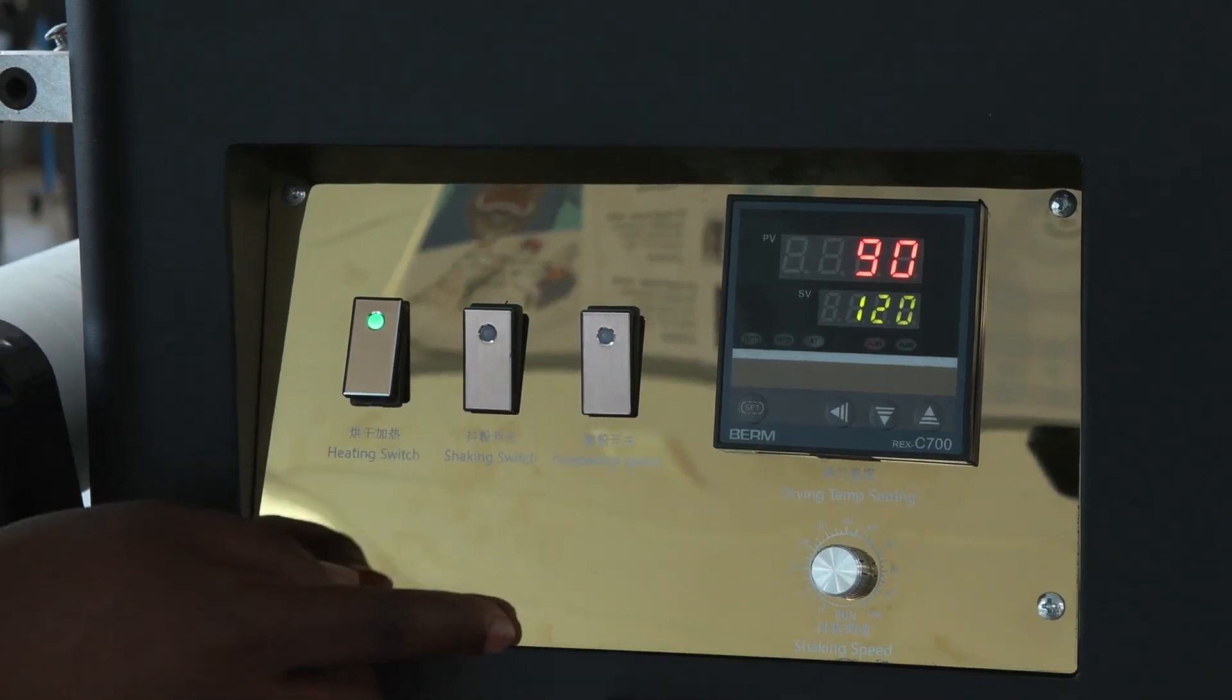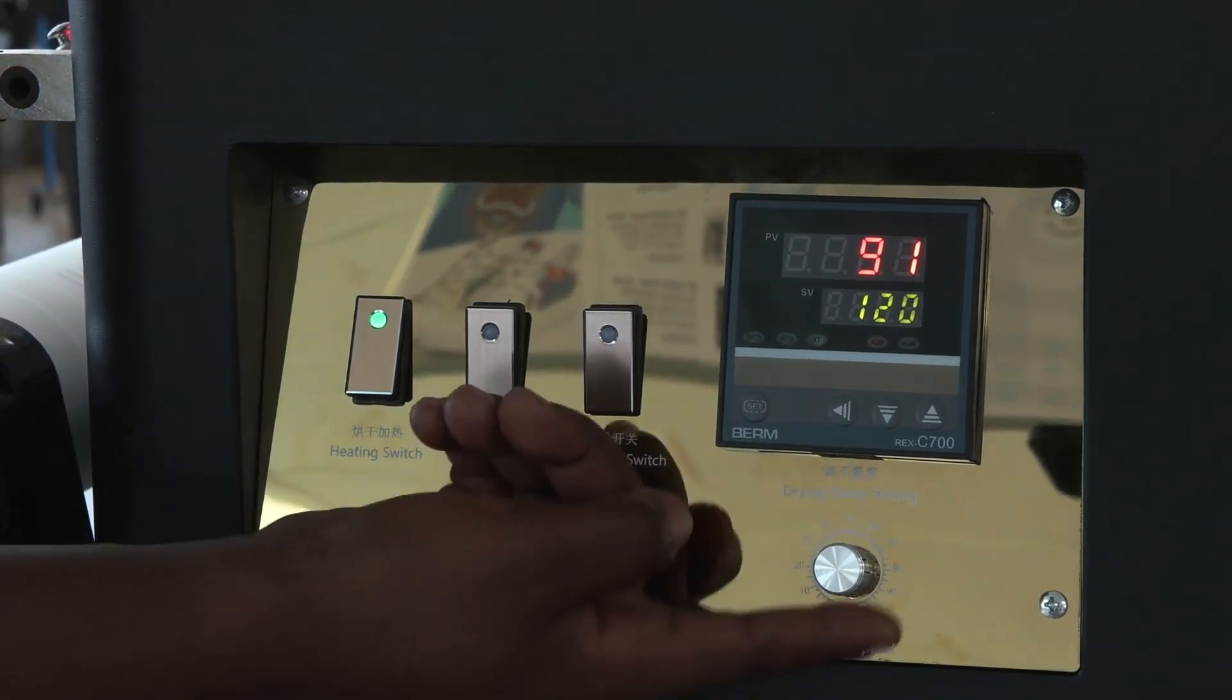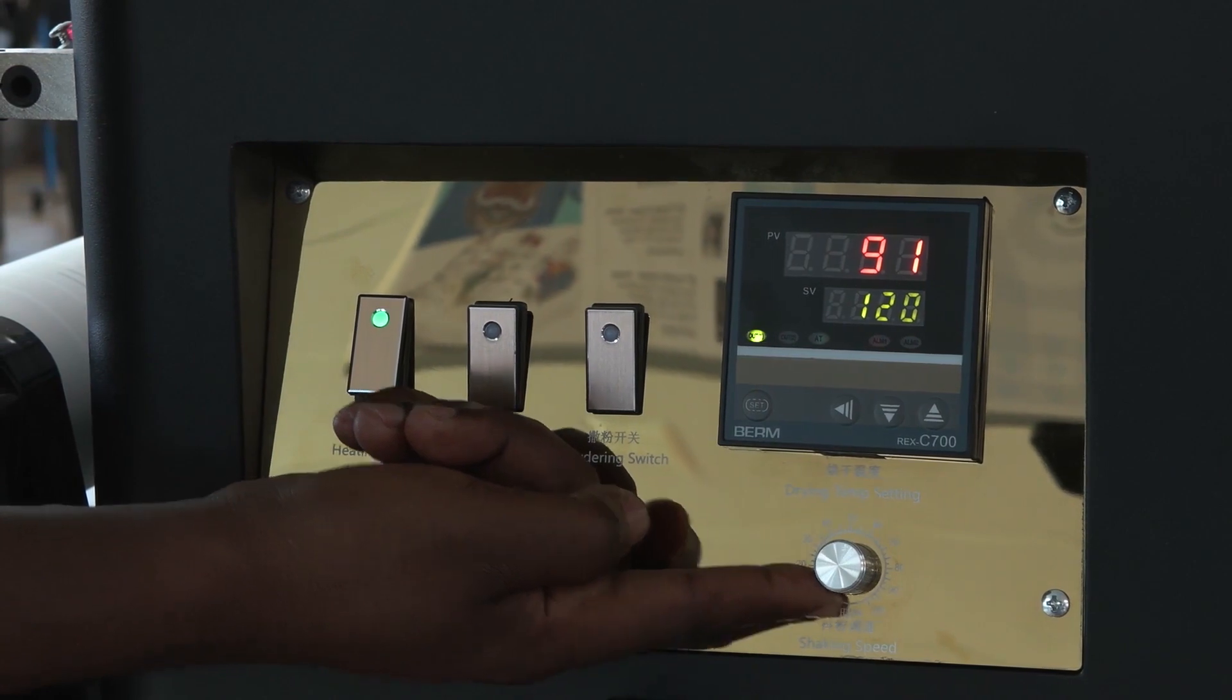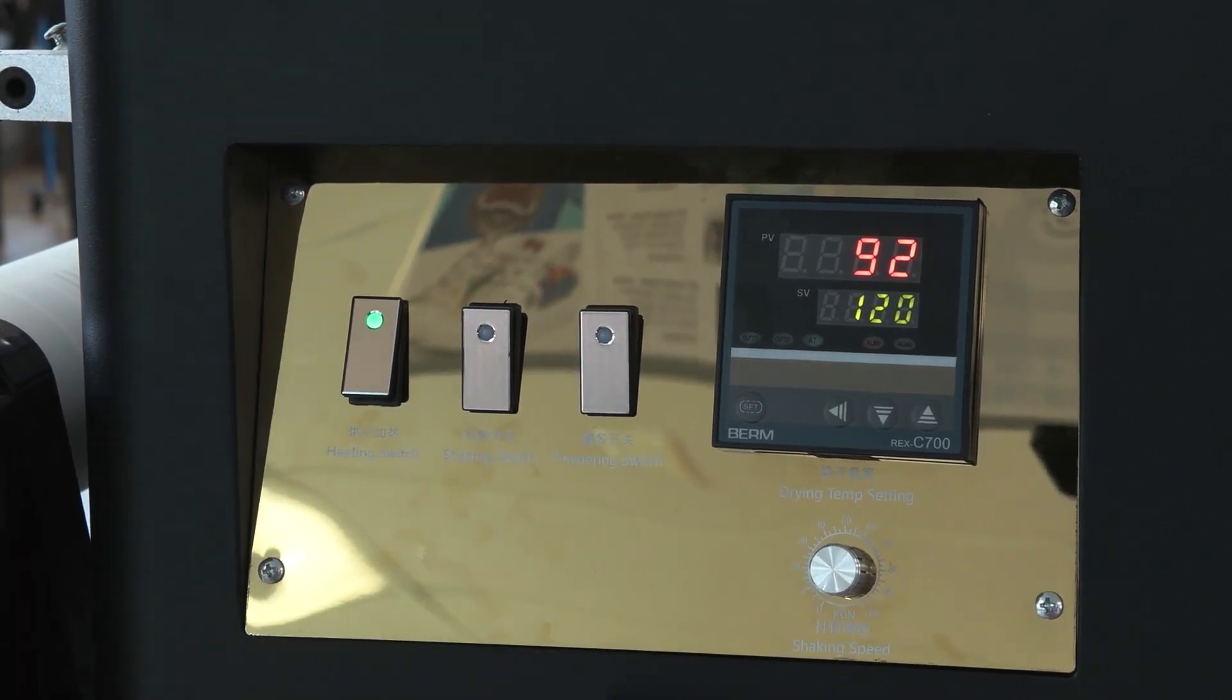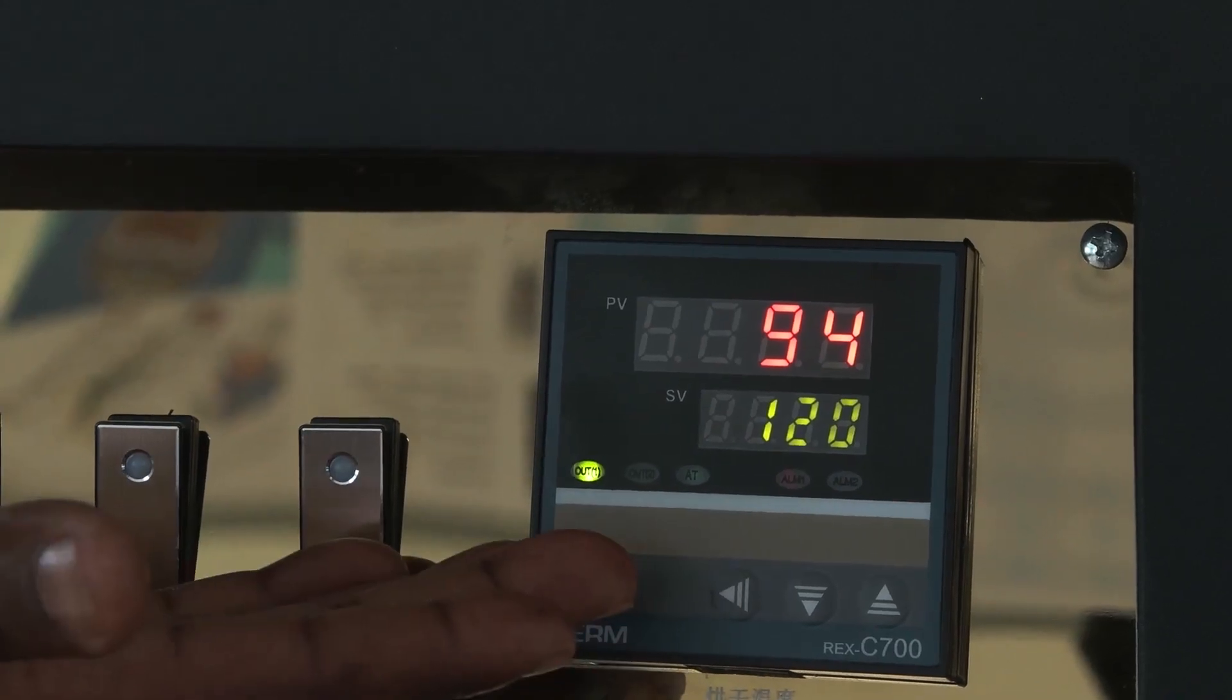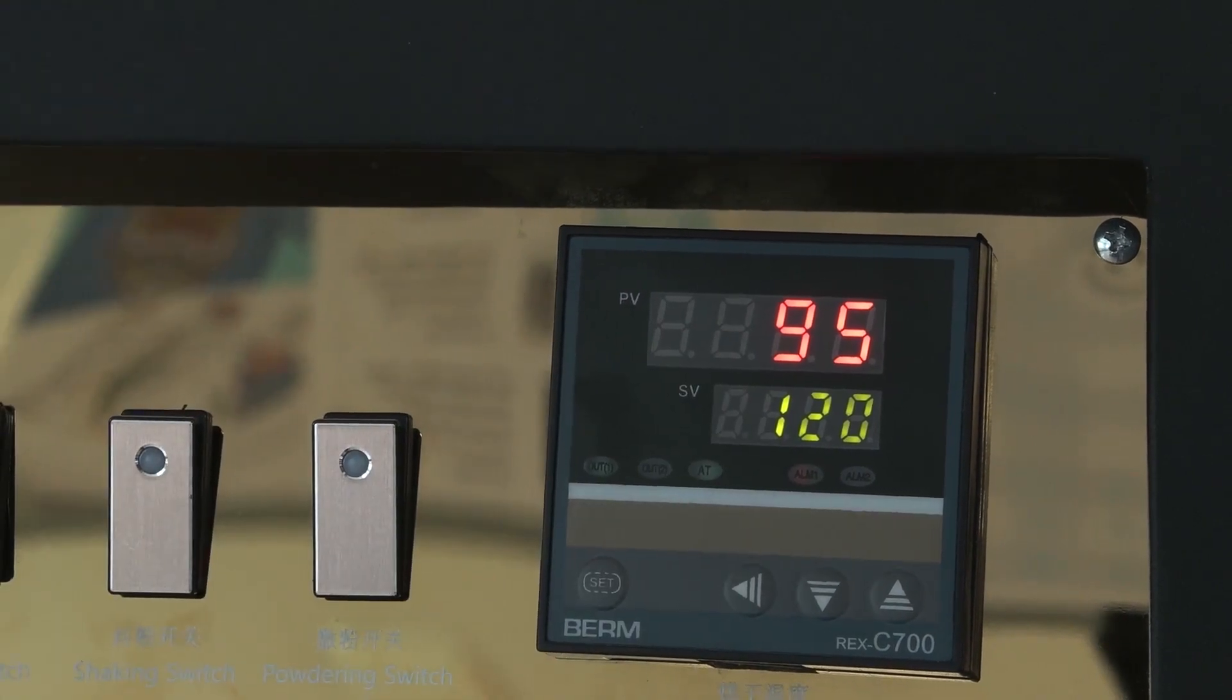And on this knob is where you control your shaking speed, and then up here is where you do your temperature for your oven.